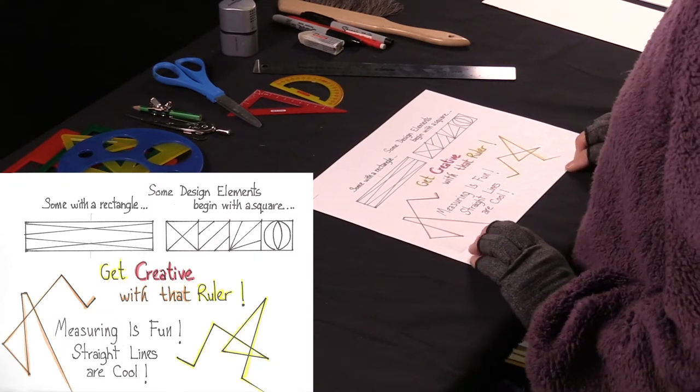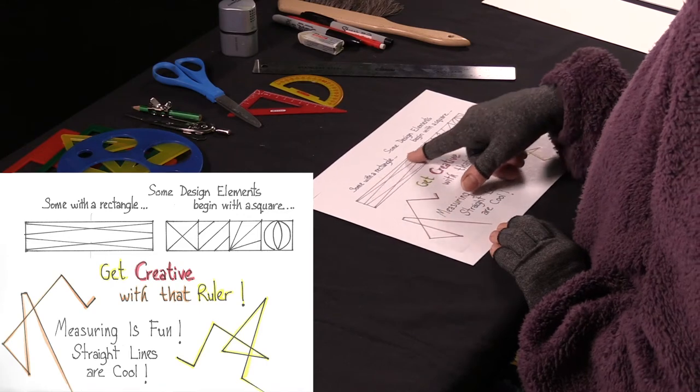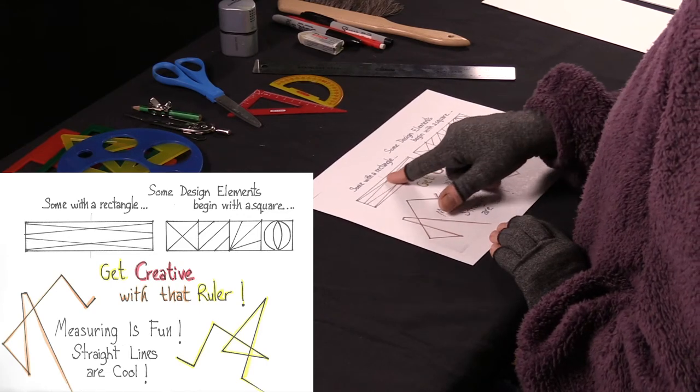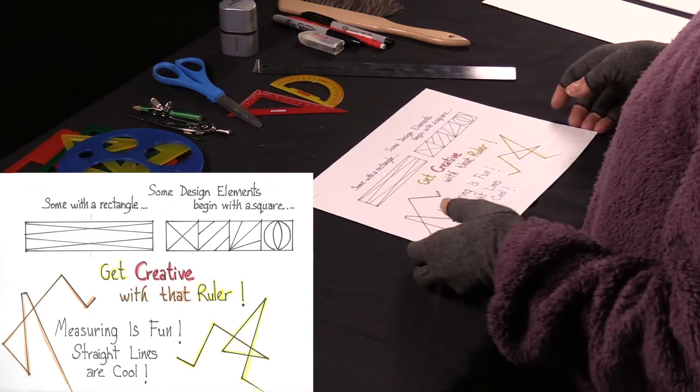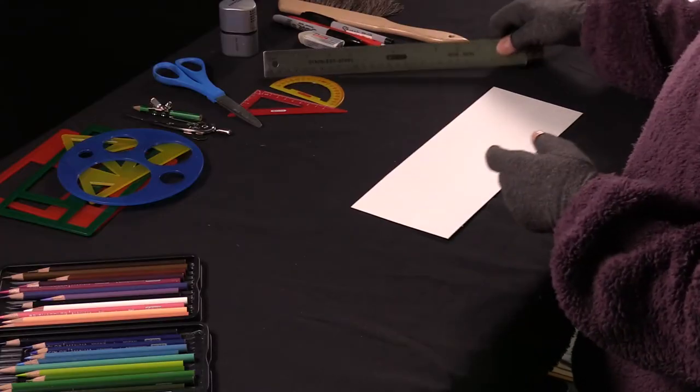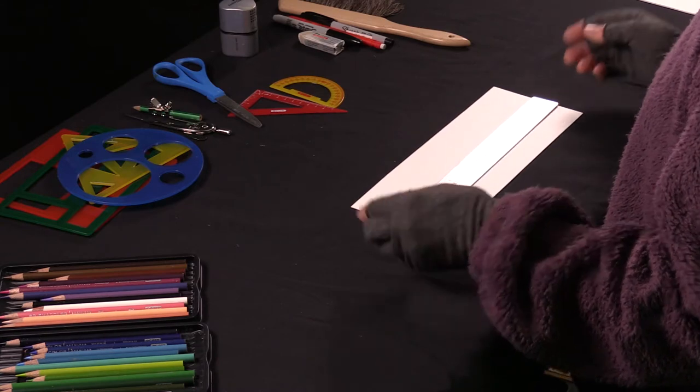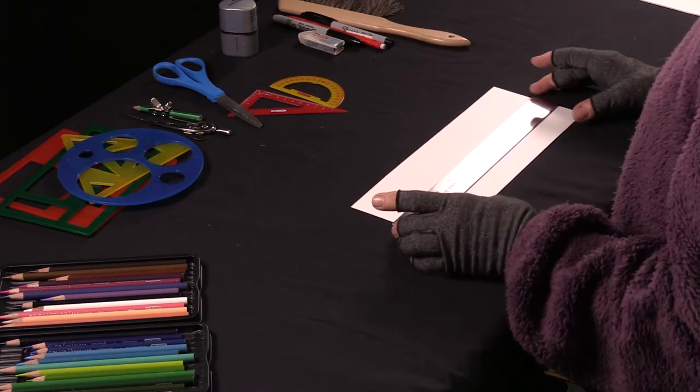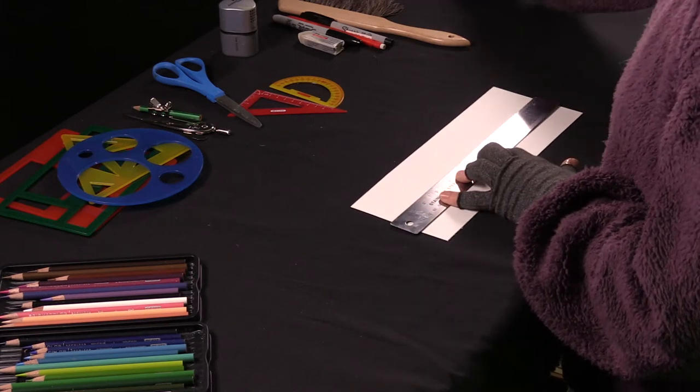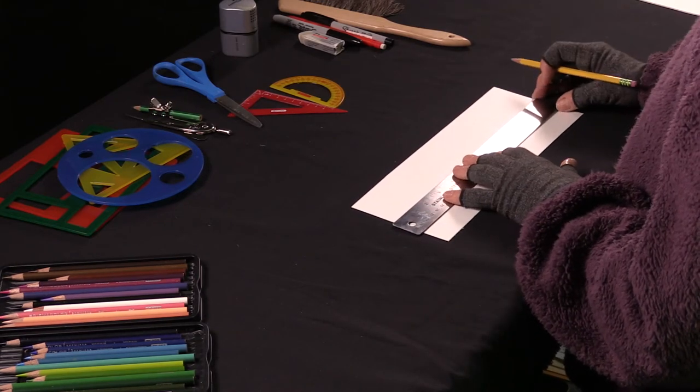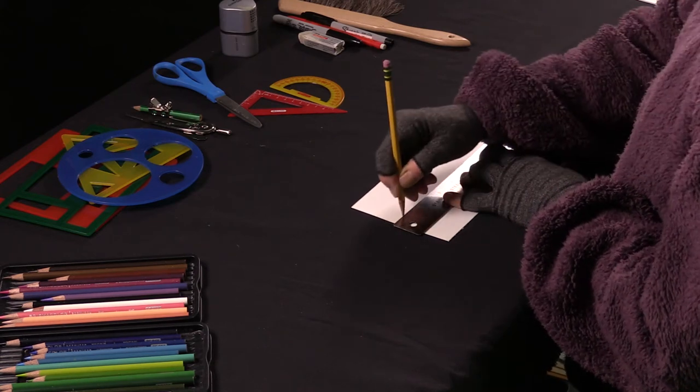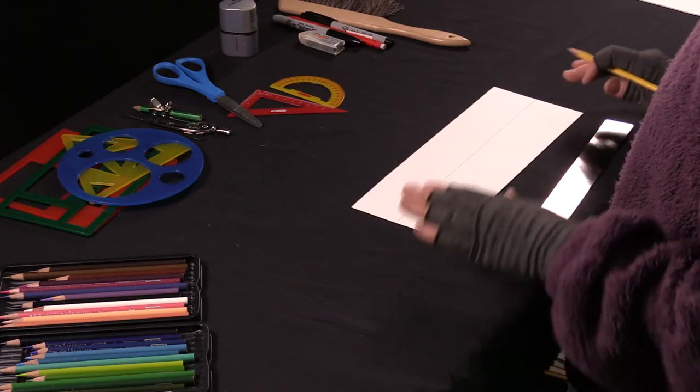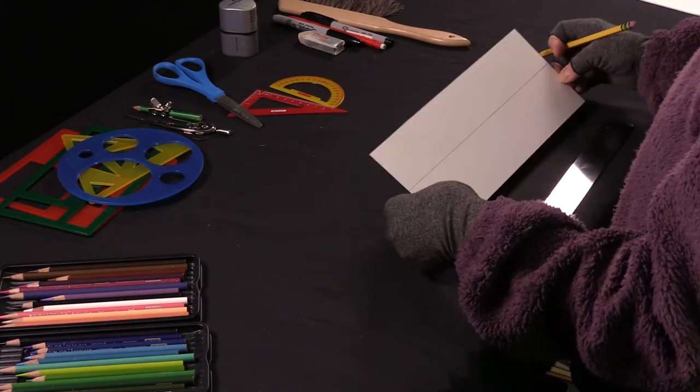Let's get creative with that ruler. Some design elements begin with a square, some with a rectangle. Measuring is fun, straight lines are cool, let's get started. I'm going to do this size. The 4 1/2 inch by 12 inch piece of paper. The very first thing I'm going to do, is I'm going to draw a line down the middle. As with all of my drawing lessons, I ask that you draw lightly, even though I'm drawing heavily. I'm drawing heavy, so you can see my marks on the film. So I just made this kind of in half, it's okay if it's not perfect.